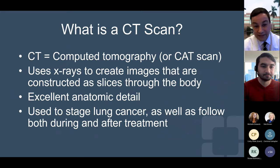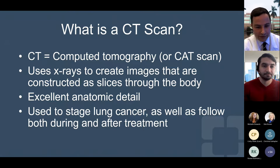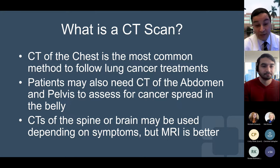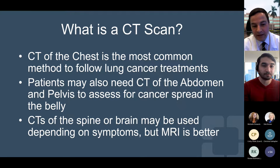Next, I'll discuss CT. What is a CT scan? CT stands for computed tomography, also known as a CAT scan, and it uses multiple x-rays to create images constructed as slices throughout the body. It provides excellent anatomic detail showing parts of the lung as well as other parts of the body, and is used to stage lung cancer as well as to follow both during and after treatment. CT of the chest is the most common method to follow lung cancer treatments. People may also need CT of other body parts — for example, your abdomen and pelvis — to assess whether cancer has spread into the belly. CT of the spine or brain may also be used, though for these body parts MRI is actually typically better.